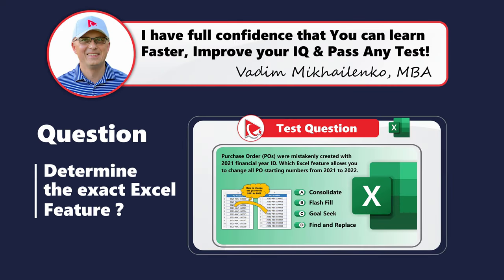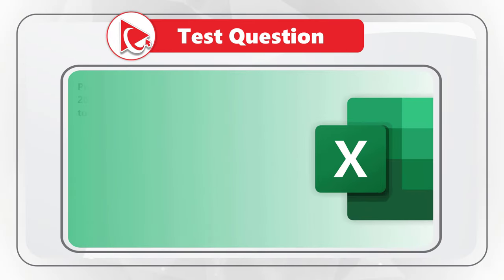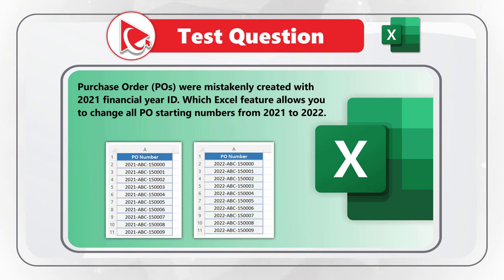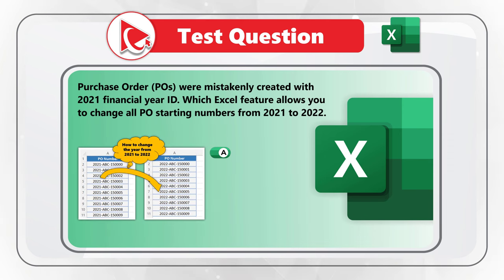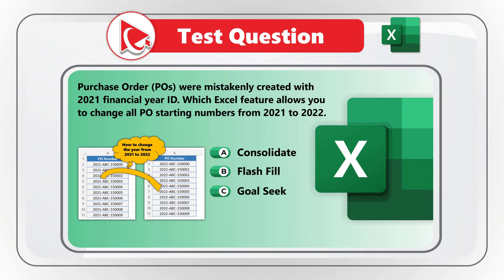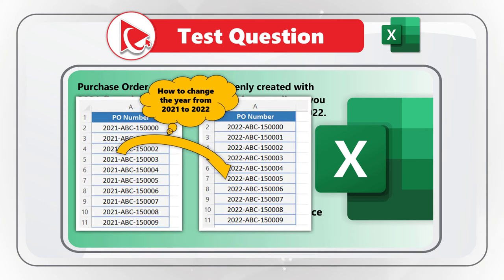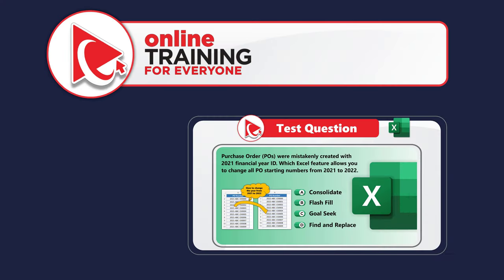Here's another amazing question. Purchase orders were mistakenly created with the 2021 financial year ID. Which Excel feature allows you to change all purchase order starting numbers from 2021 to 2022? You have four choices: Choice A, Consolidate; Choice B, Flash Fill; Choice C, Goal Seek; and Choice D, Find and Replace. Take a close look at the purchase order numbers and see which feature you would choose.